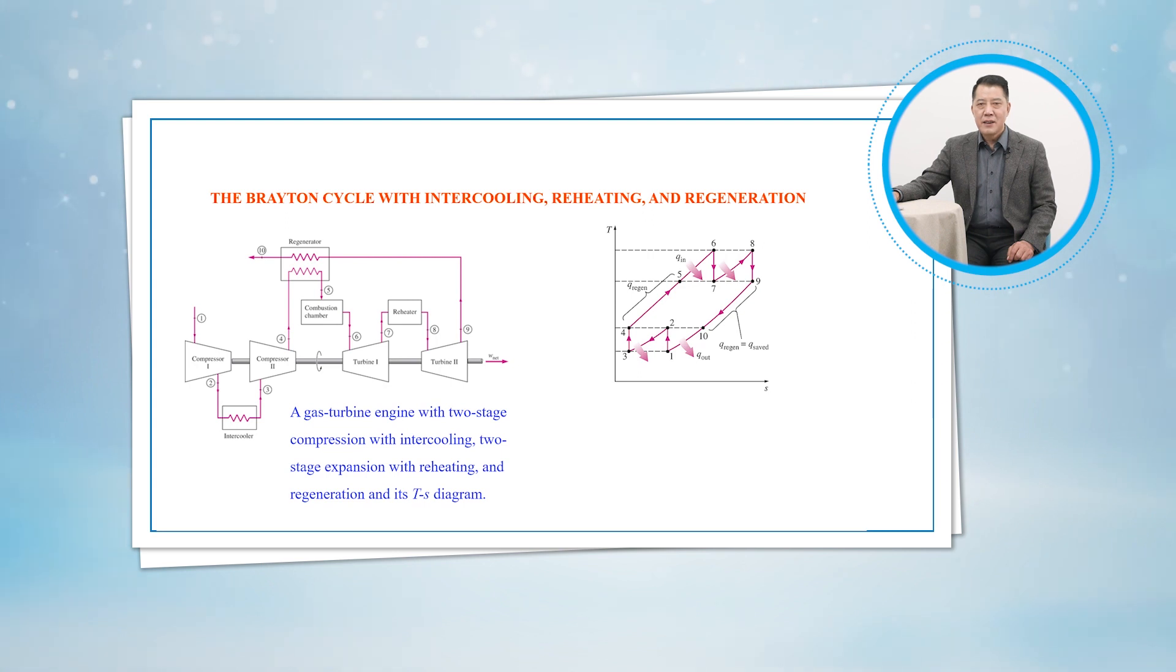The gas enters the first stage of the turbine at state 6 and expands isentropically to state 7, where it enters the reheater. It is reheated at constant pressure to state 8, where it enters the second stage of the turbine.